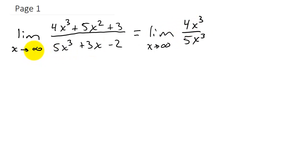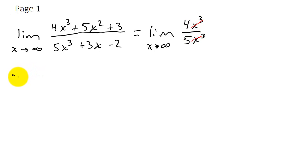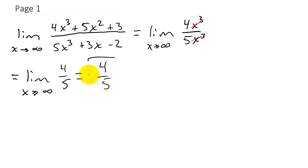Only when x is approaching infinity or negative infinity. And keep in mind, I'm not saying that this function equals this function — I'm saying the limit of this function as x goes to infinity equals the limit of this function as x goes to infinity. The x cubes cancel out, and I'm left with the limit as x goes to infinity of 4/5. The limit of a constant is just that constant, so the answer is 4/5.